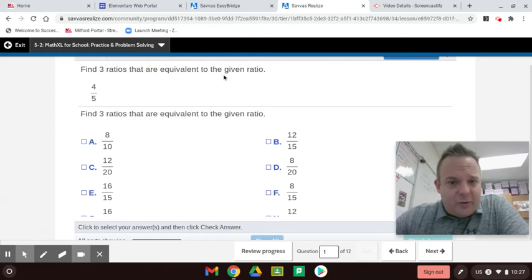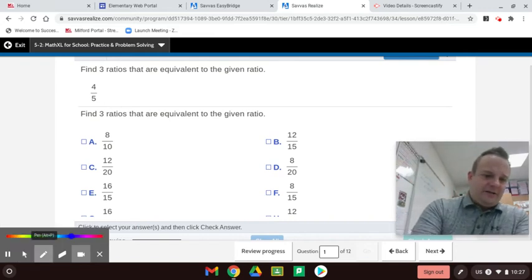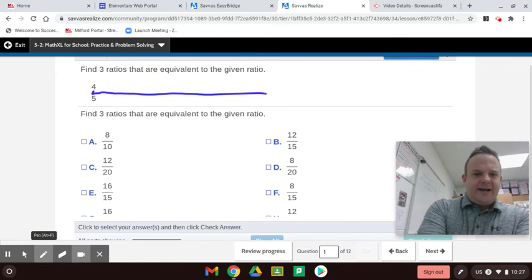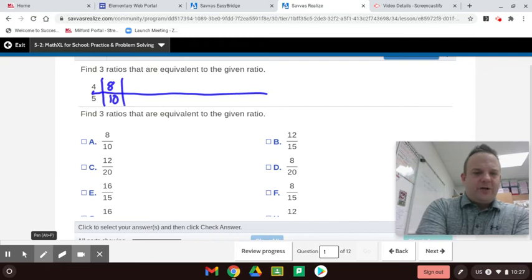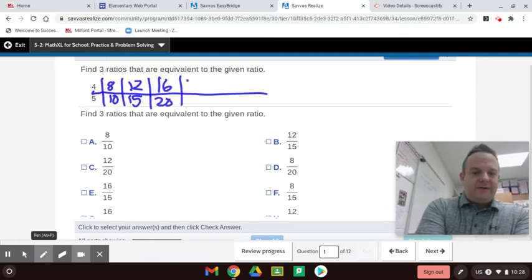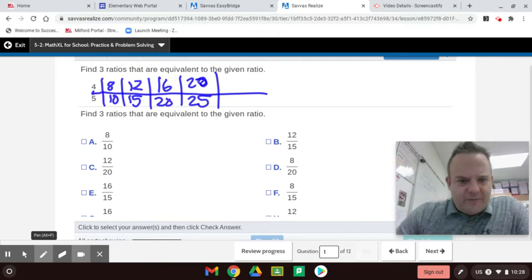Find three ratios that are equivalent to the given ratio of 4 to 5. So ratios are also a fraction. So this is a 4 to 5 ratio. And what I like to do with this is you could make a ratio table. Now you could extend it out like this. And multiply by 2. So 4 to 5. So 4 times 2 is 8. 5 times 2 is 10. Now I'm going to go back to the 4. 4 times 3 is 12. 5 times 3 is 15. 4 times 4 is 16. And 5 times 4 is 20. And 4 times 5 is 20. And 5 times 5 is 25.